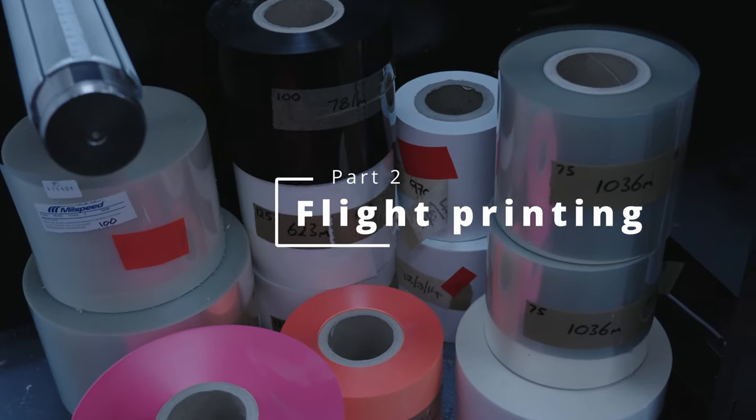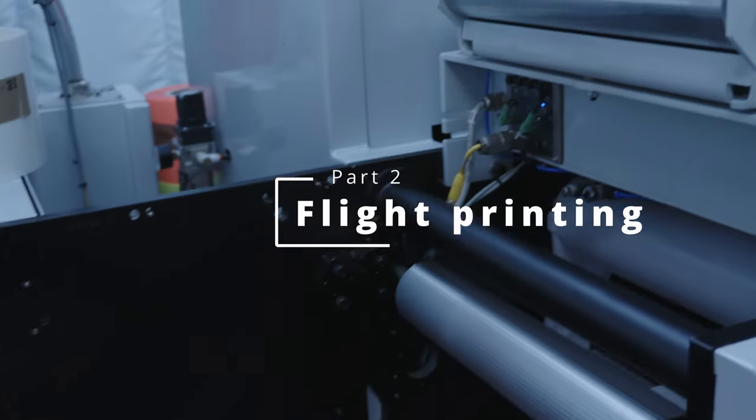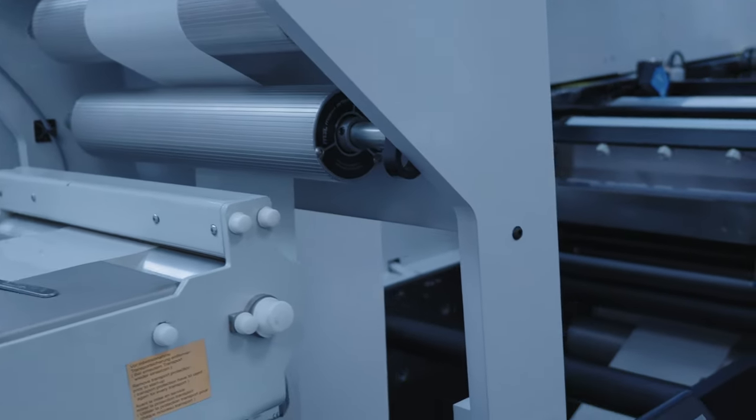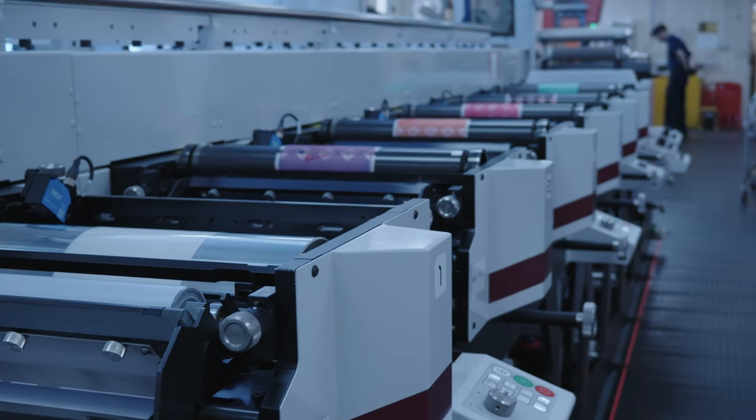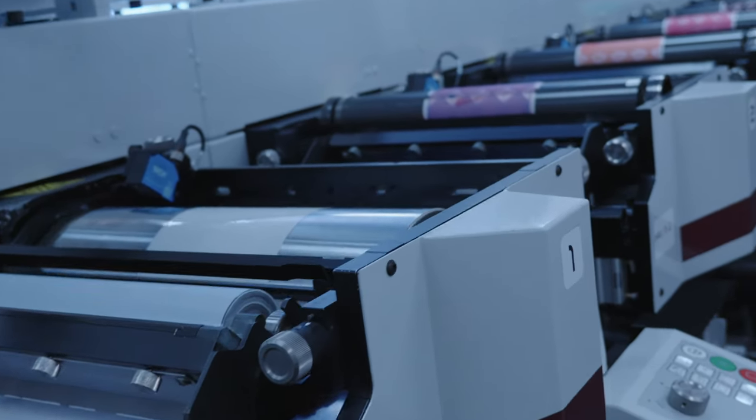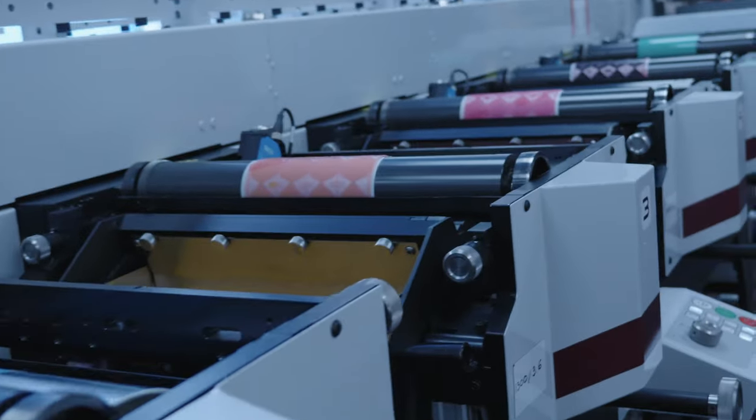Part 2: Flight Printing. Now as you can see, there's all different color rolls here depending on the flight that they're going to be printing. As the rolls go through the machine, it'll print a different color based on the primary colors that you get in printing.